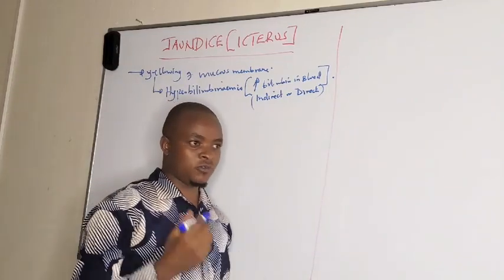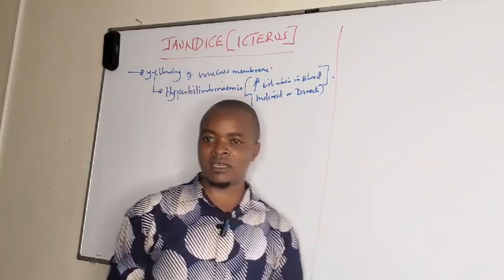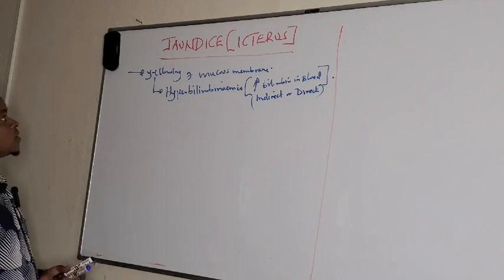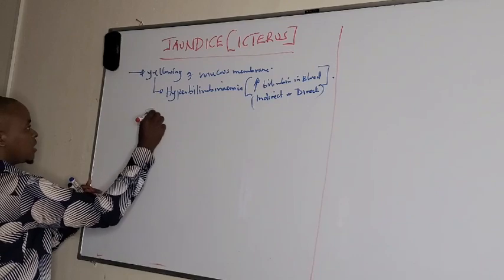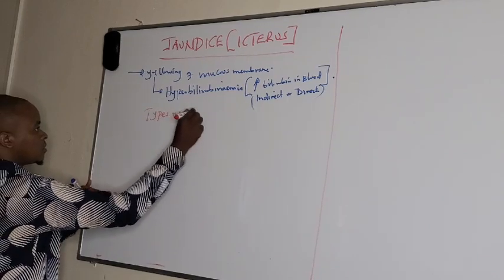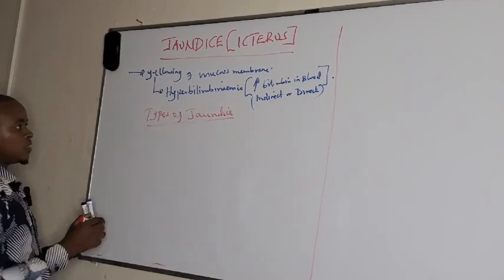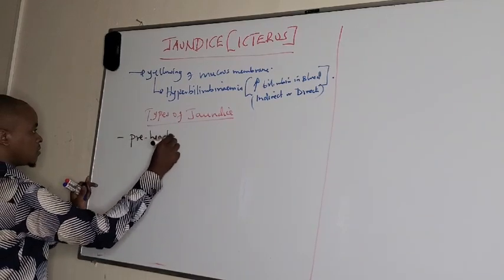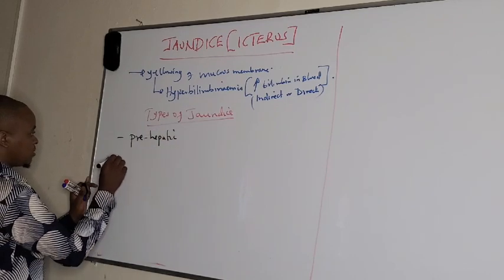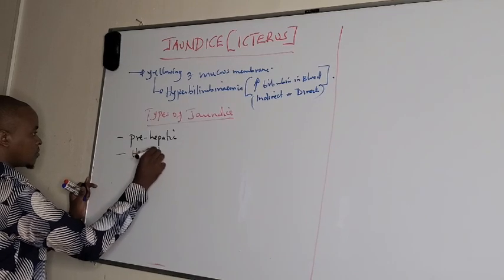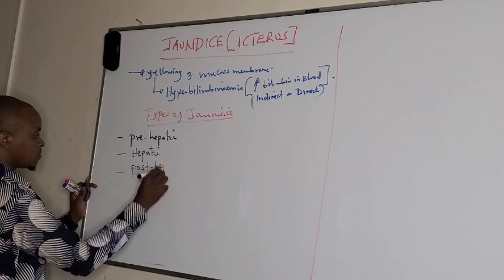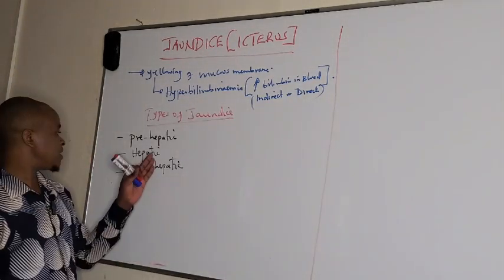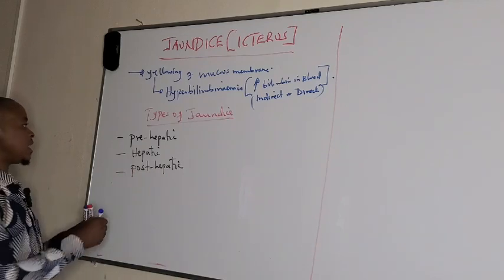When bilirubin becomes excessive, even all the mucous membranes begin to turn a yellowing color, and that is what we call jaundice. This jaundice, or icterus, is categorized into three types: pre-hepatic jaundice, hepatic jaundice, and post-hepatic jaundice.